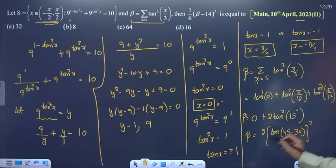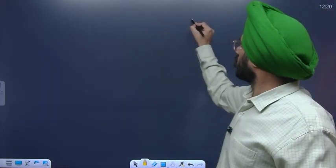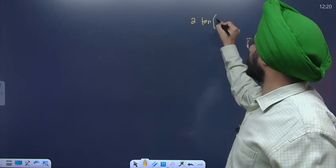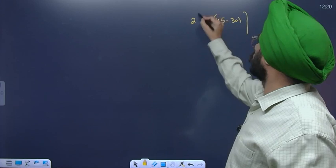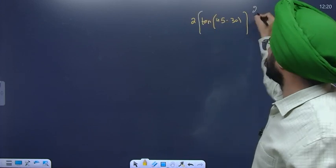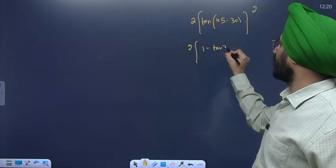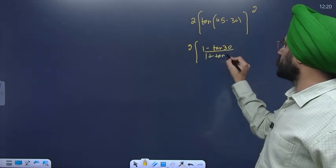Ab is solve karte hain. Yeh term banegi: 2·tan²(45° - 30°). Ise solve karte hain to formula lagega: tan(45-30) = (1 - tan30)/(1 + tan30), poora square.